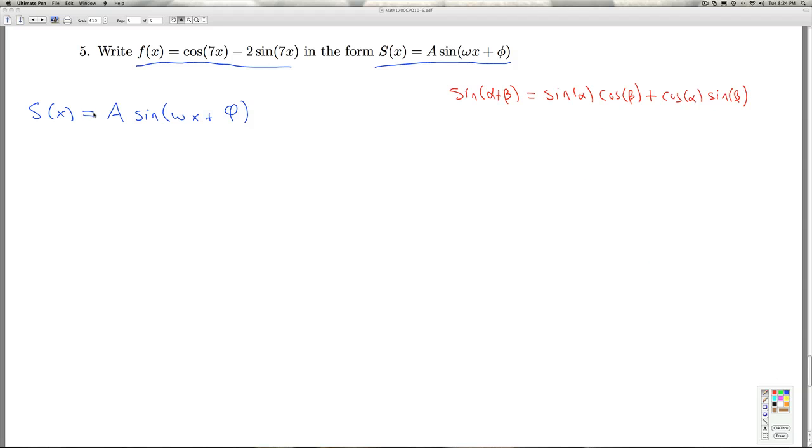So when I expand this out, I'm thinking of this as being alpha and that being beta. So I'm going to expand it out and multiply it by A. So I get A times sine ω x cosine φ plus A cosine ω x sine φ.